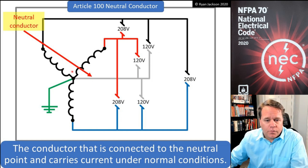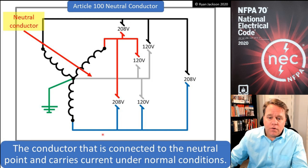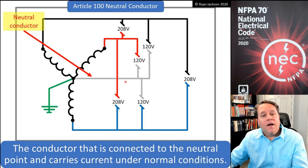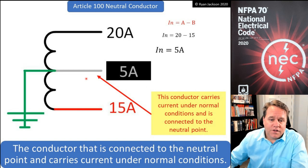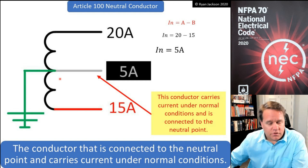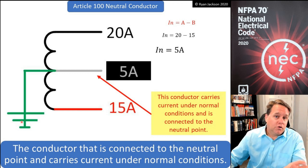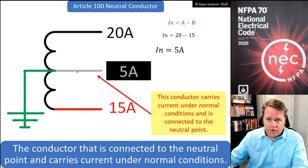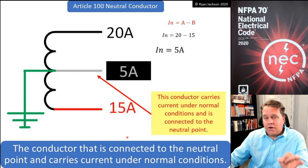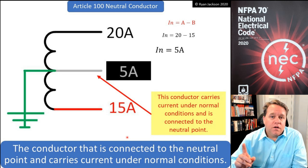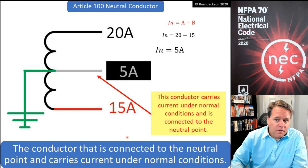This white wire here is connected to the neutral point and carries the unbalanced load of the three-phase conductors — that's our neutral conductor, because it connects to the neutral point and carries current under normal conditions. If these systems are solidly grounded, as shown by the grounding symbol, then that's a grounded conductor and it is also a neutral conductor. However, not every grounded conductor is a neutral conductor, because some grounded conductors do not connect to a neutral point.